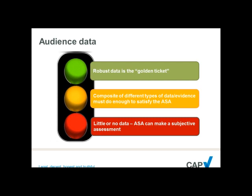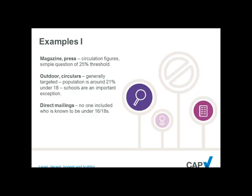Where there is little or no data, you run a serious risk. If the ASA doesn't have the data either, it then has to rest on subjective assessment and subjective judgment. If they think the content is likely to have an audience of under-16s or under-18s, there is a significant risk that they will find you haven't done enough to satisfy the must-not-be-directed-at test.